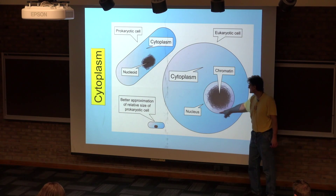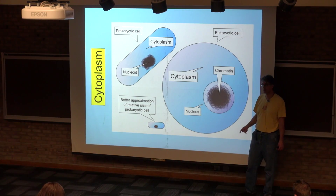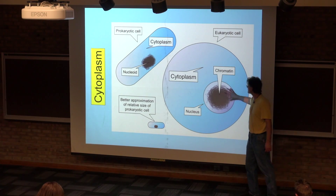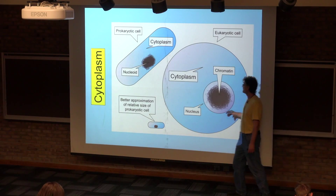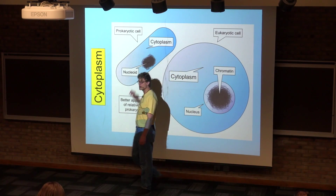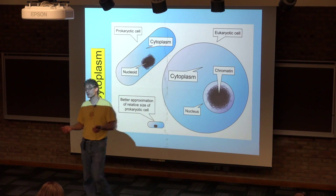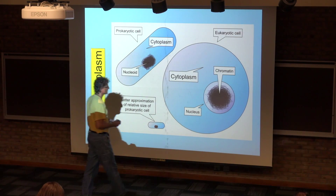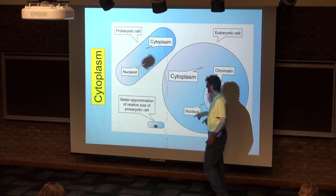In eukaryotic cells, this chromatin is found inside a double membrane, in this area called the nucleus. But outside of the nucleus and inside of the plasma membrane — or simply inside of the plasma membrane in prokaryotic cells — you have this liquid area called the cytoplasm. That's what I'm attempting to emphasize here.